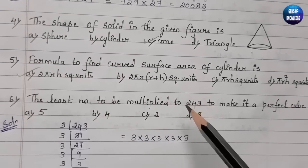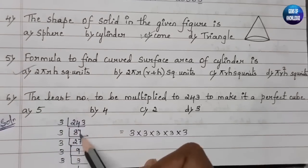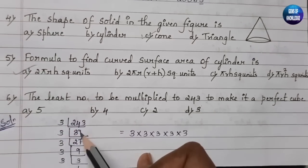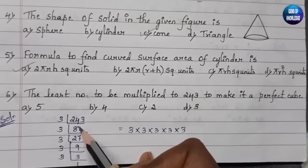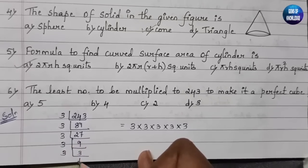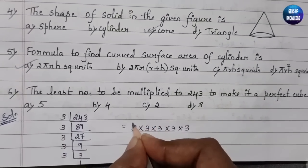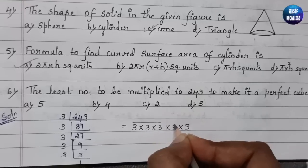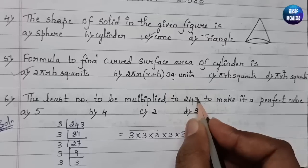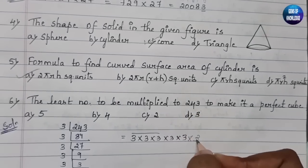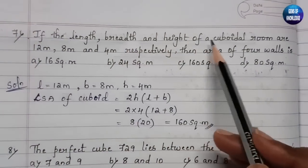The sixth question: the least number to be multiplied to 243 to make it a perfect cube. Factorizing 243: we get 3 × 3 × 3 × 3 × 3, which is five 3s. We group them into sets of three: one group of three 3s is complete, but we are left with only two 3s. We need one more 3 to complete the next group, so the answer is 3.